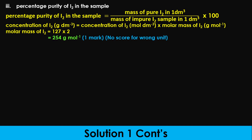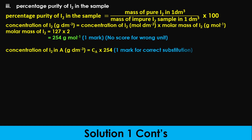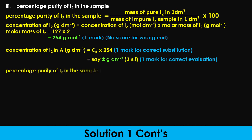Substituting the values of the molar concentration of iodine and its molar mass, the concentration of iodine in A in grams per dm³ will be x grams per dm³. Therefore, the percentage purity of iodine will be approximately y percent. Your percentage purity answer can be given to two decimal places.